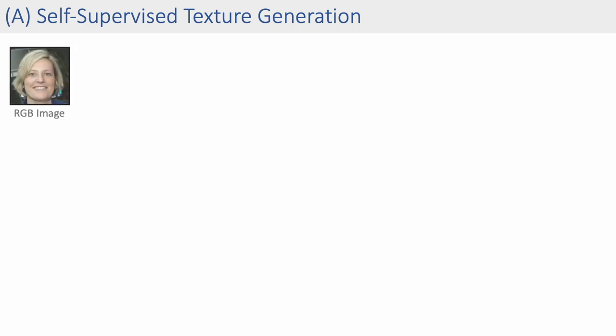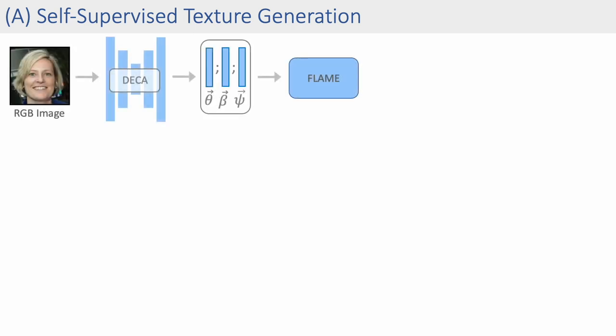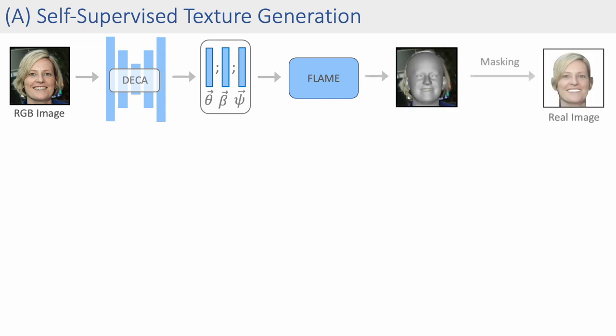We learn texture generation for 3D morphable models in a self-supervised fashion from a collection of RGB images. We use DECA to extract the distribution of 3D face shapes and expressions, as well as the camera poses from the dataset. We then mask out the background and mouth interior to generate real images for our adversarial formulation.